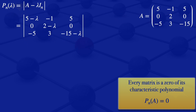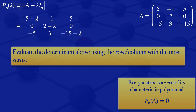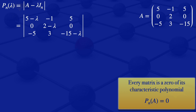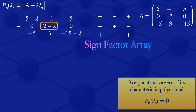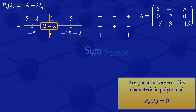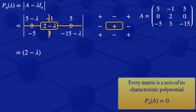We can evaluate that determinant using the row or column with the most zeros. Row number 2 has the most zeros — two of them. I will use that row and look at the element 2 minus lambda. Using the array of positive, negative, positive signs, the 2 minus lambda corresponds to a positive sign. So we have 2 minus lambda multiplied by the determinant of the uncovered elements: 5 minus lambda, 5, minus 5, minus 15 minus lambda.